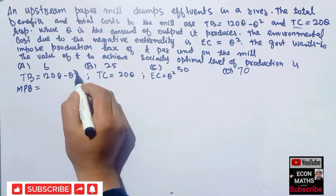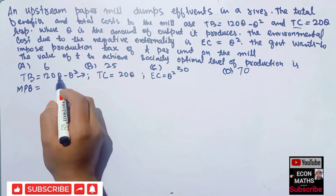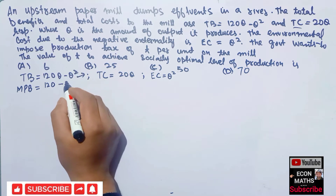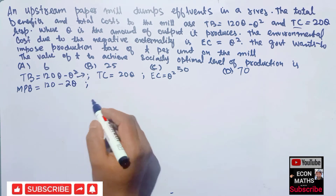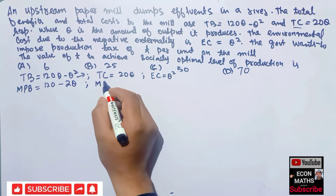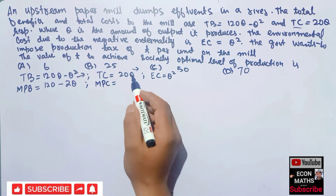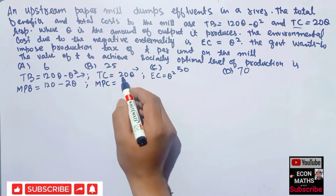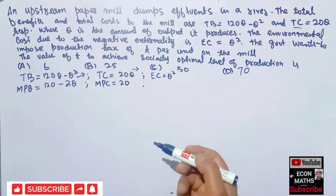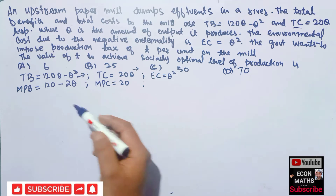The derivative of 120q with respect to q is 120, minus the derivative of q squared which is 2q. So marginal private benefit equals 120 minus 2q. Similarly, total cost is given as 20q, so marginal private cost is the derivative of total cost — the derivative of 20q is simply 20. We are also given the environmental cost which is q squared, and we will derive its marginal form later.